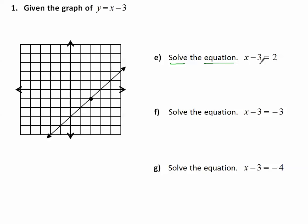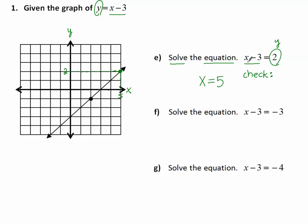Solve the equation x minus 3 equals 2. Again, we're using the graph of y equals x minus 3. In place of y, we put 2. I look on the y-axis where y is 2, go over to the line, find the point, then down to the x-axis — that's where x is 5. To check: plug in 5 for x. 5 minus 3 makes 2. We did it correctly.